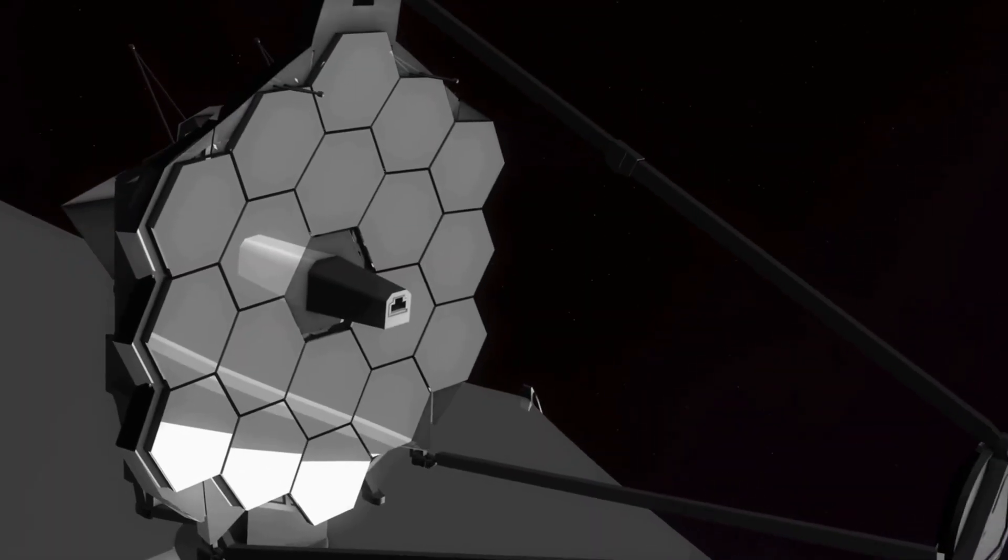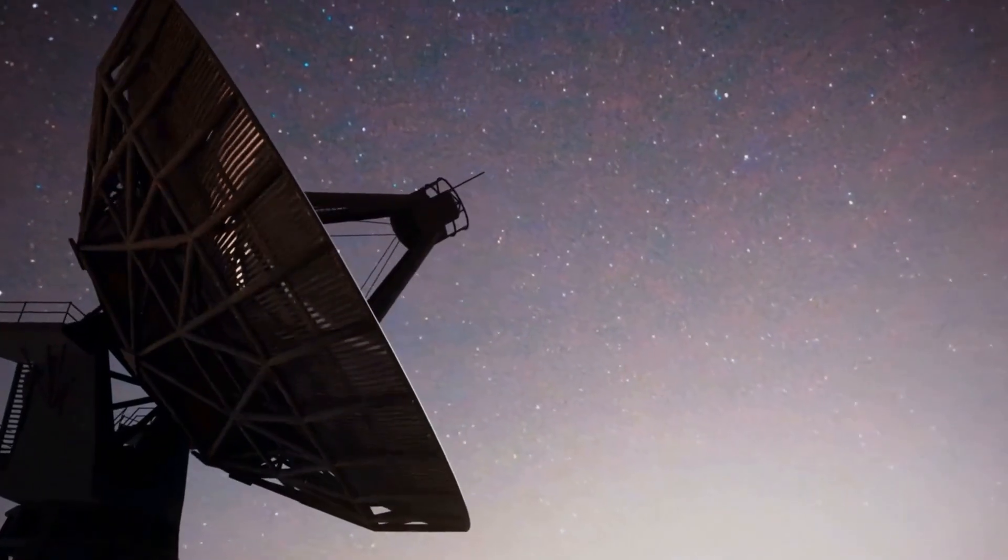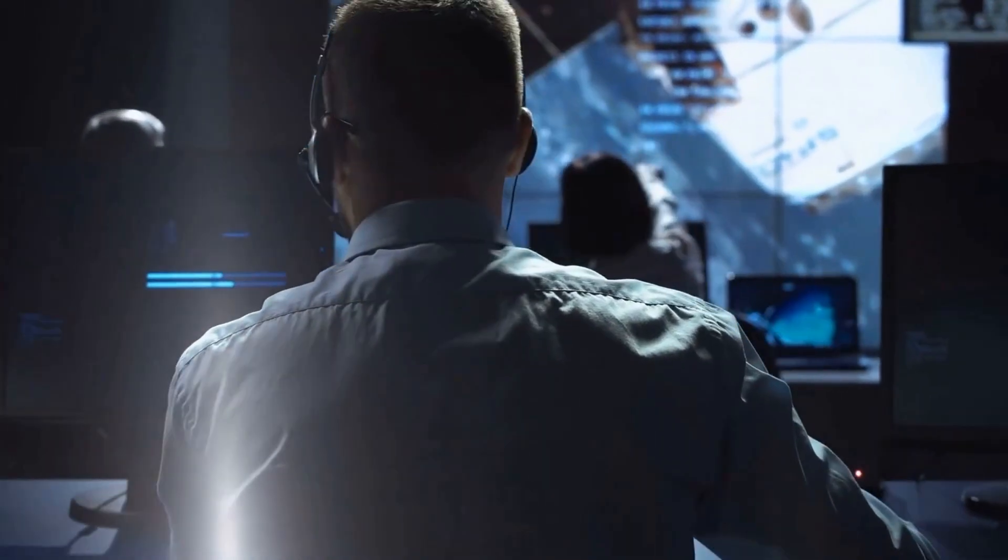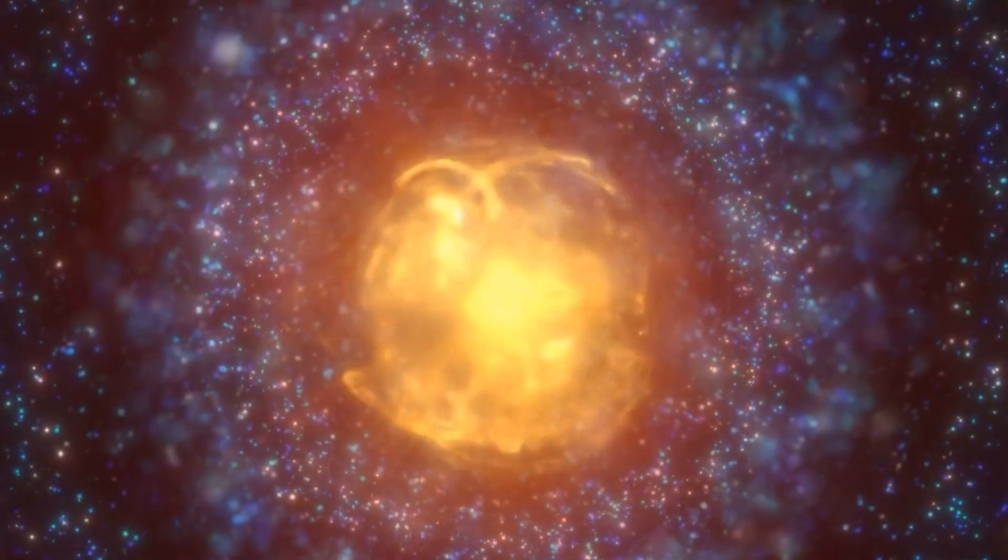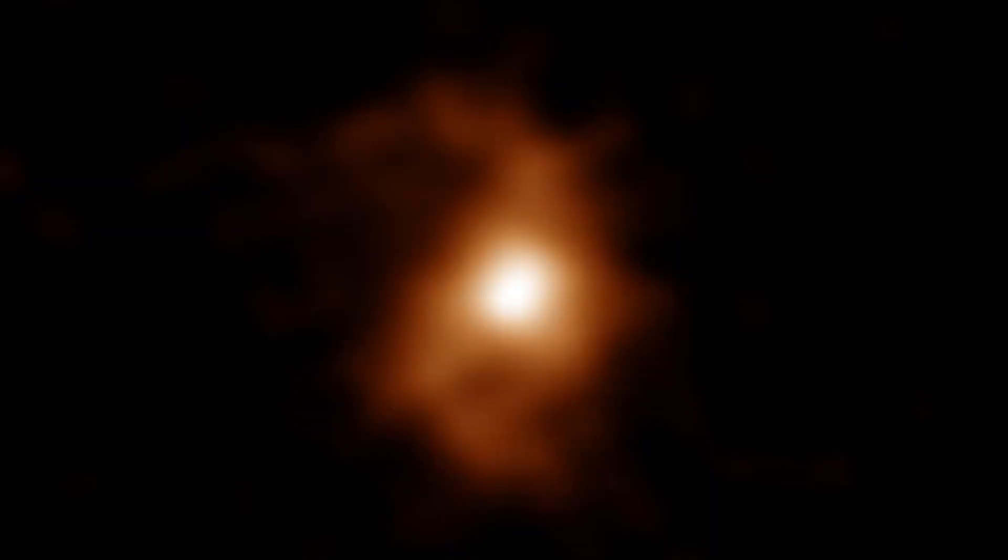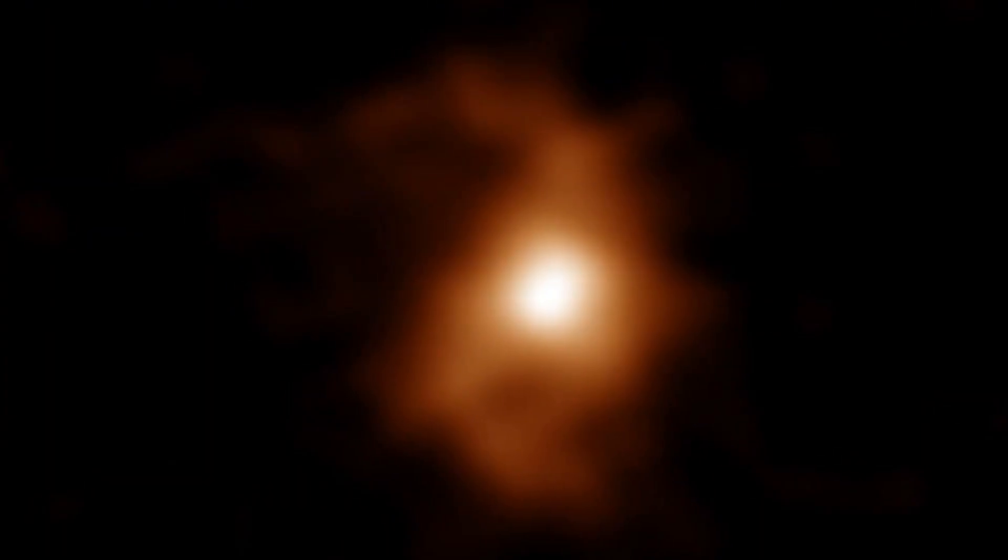Now, with Webb's unmatched infrared capabilities, we're seeing signs no telescope has ever revealed. Indicators of real-time collapse. Massive discharges of energy. Surface layers boiling and twisting. Magnetic fields spiraling into chaos. Betelgeuse isn't just dying. It's transforming before our eyes.